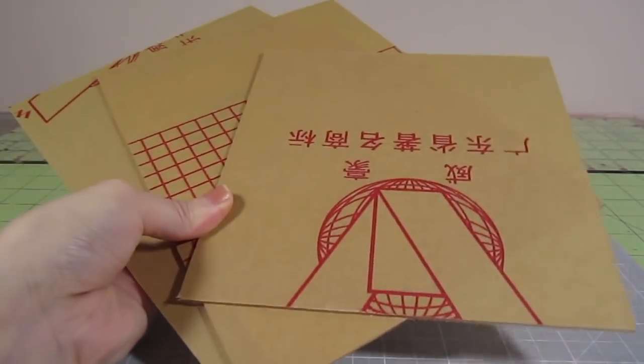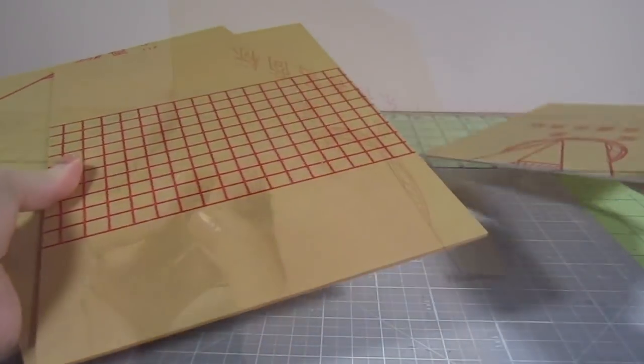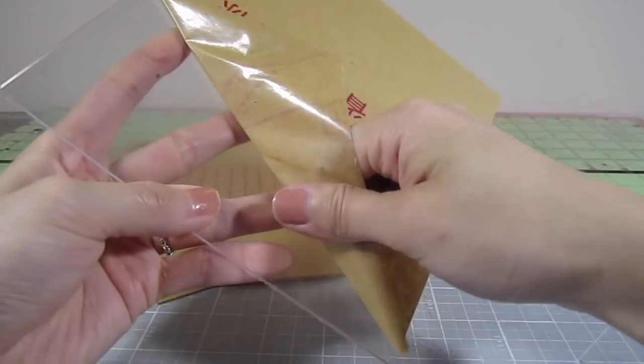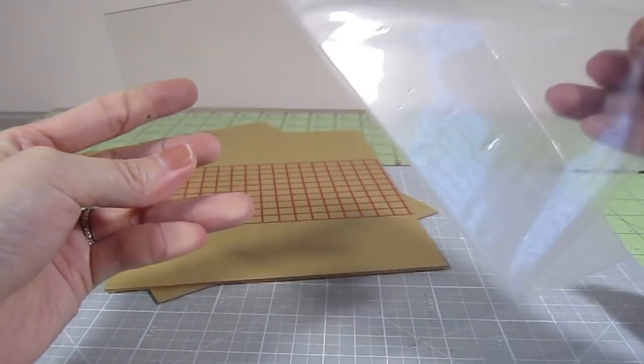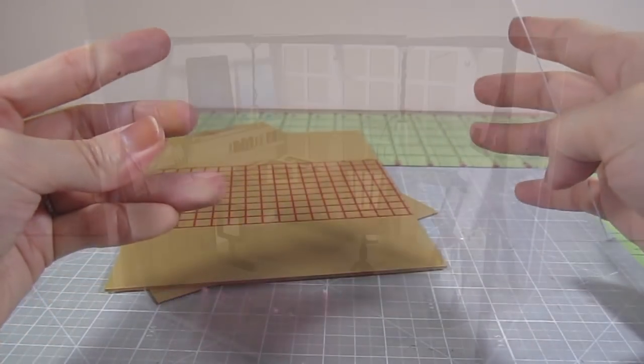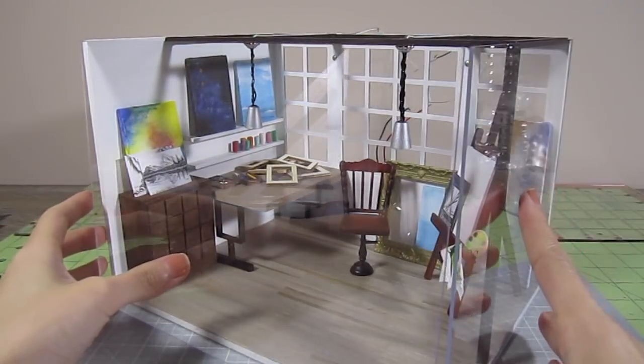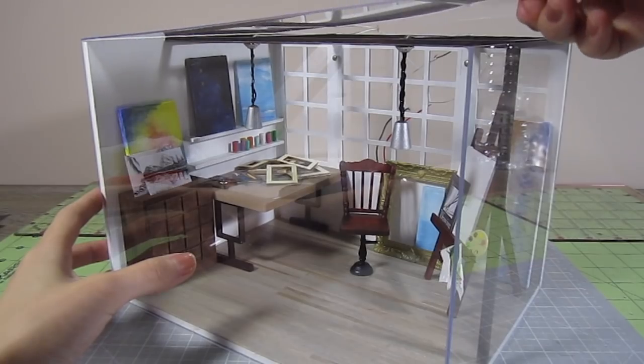This last part is optional but highly recommended. The kit comes with 3 acrylic sheets for a dust cover. Peel the paper and plastic coating off the sides to expose the crystal clear plastic. You can glue them right onto the room or make it removable. I use gem tag glue because it works great for plastic and dries completely clear.